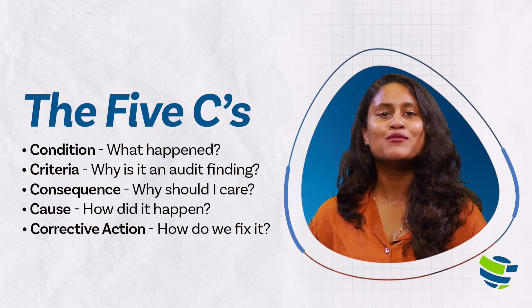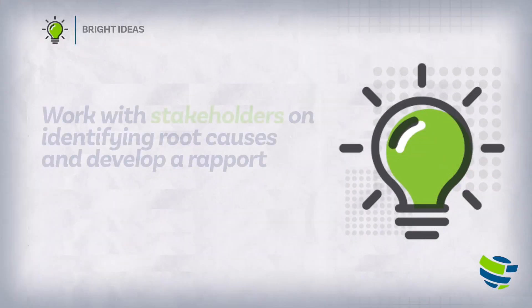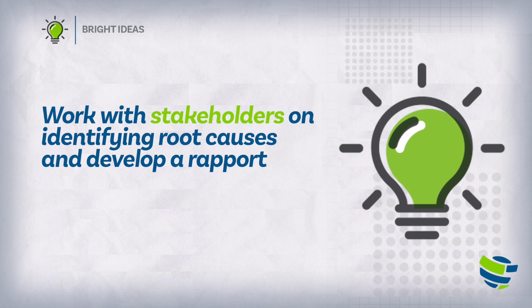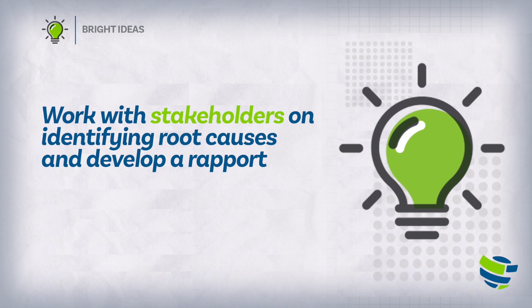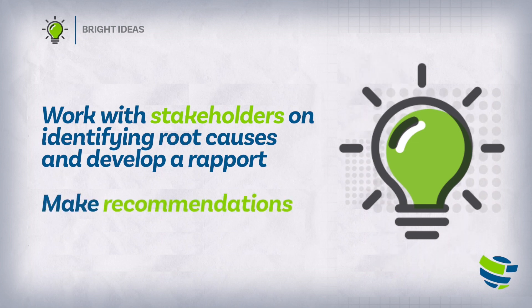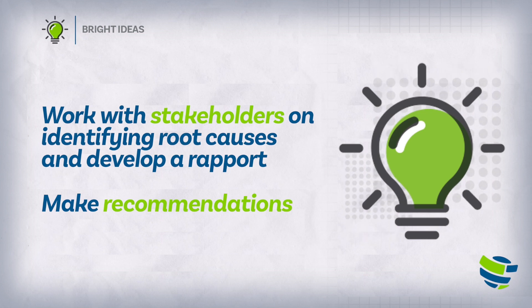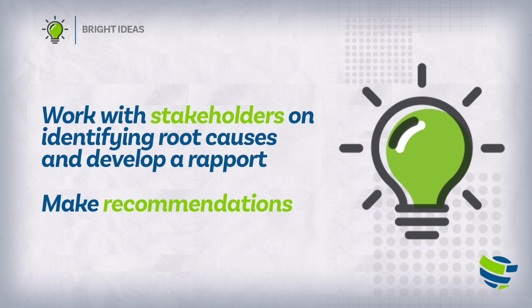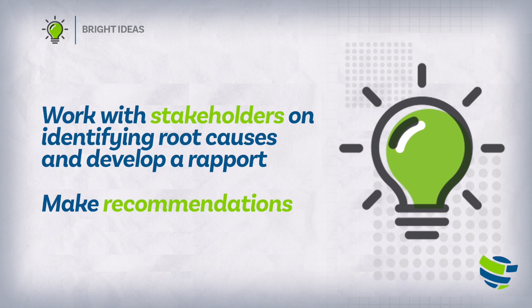The last C, corrective action, is typically written up by management, sometimes using recommendations suggested by the auditors. Here's a bright idea: work with stakeholders on identifying root causes and develop a rapport with them — the better you know them, the better the work output will be. Internal audit's role is not to be the decision maker on the final plan, but internal audit can make recommendations based on previous experience and industry best practices. An auditor with experience on management actions can be a great resource by pointing out ways they've seen the issue successfully remediated in the past.